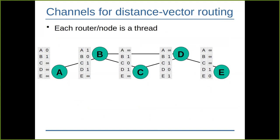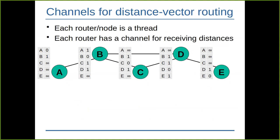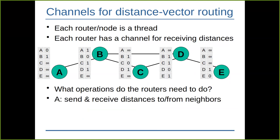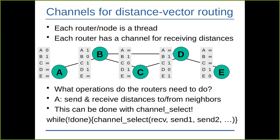Each router or node is a thread, and each router has a channel for receiving distances. We need to both send and receive: receive neighbor information and advertise our own information to neighbors. This is exactly when we can use channel select — with operations like receive, send to first node, send to second node, and so on. Select lets us perform whichever operation can be completed right away, whether it's a receive or a send.